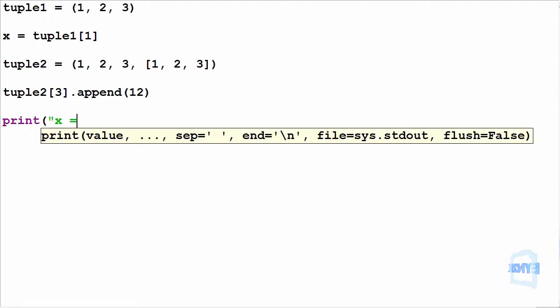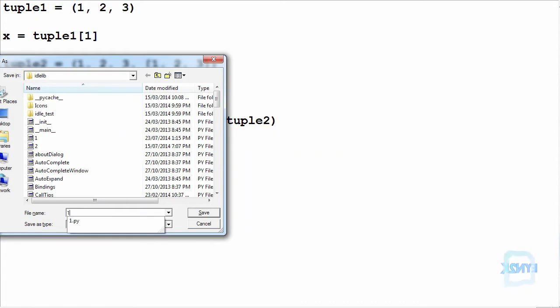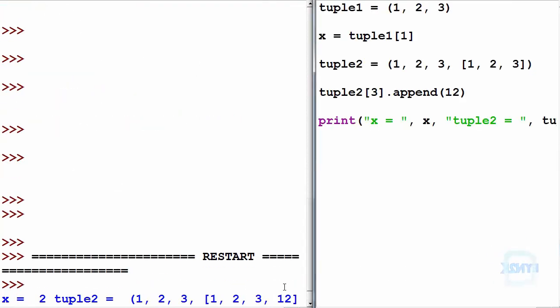Print x equals x. Now we can print that off, let's run it, remember to save it. So here we can see we've managed to append an item into an immutable tuple.